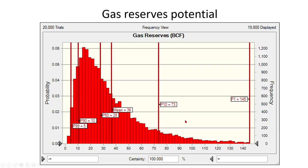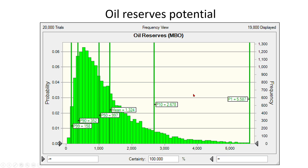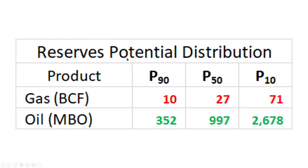To recap: we capture the gas reserve potential from the Monte Carlo simulation. We have a P90 of 10 BCF and a P10 of 145 BCF, which defines the range of what we could find when we drill this well — and we have the same for oil potential. A P90 means there's a 90% chance the well will find at least 10 BCF or greater; a P10 of 71 BCF means there's only a 10% chance of finding more than 71 BCF. This defines the unrisked distribution of our drilling prospect. The next step would be to apply risk factors and economics, but that will be covered in another video.